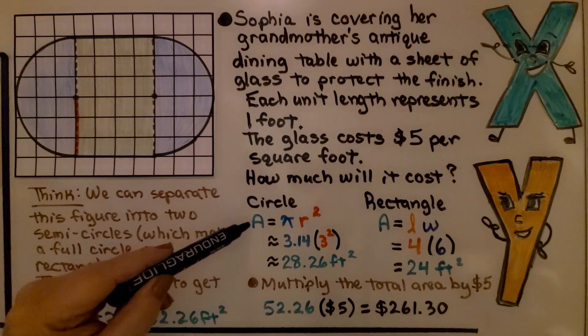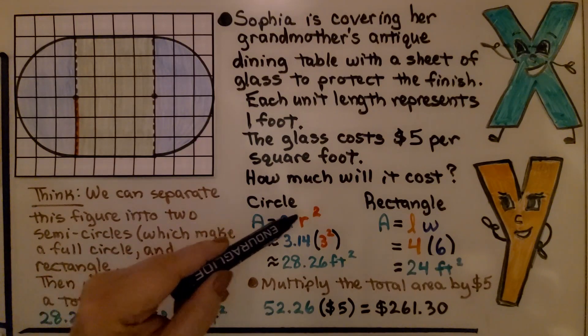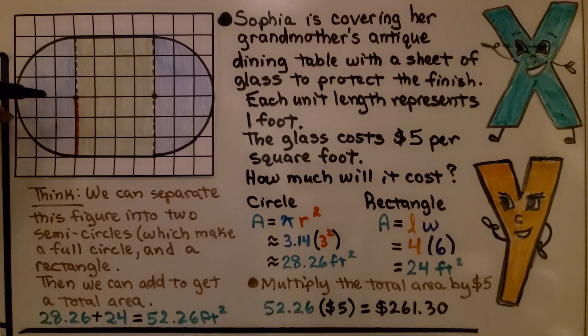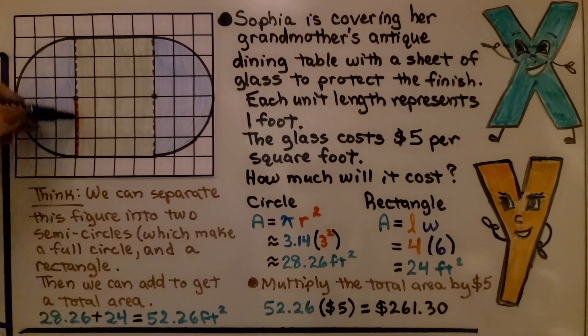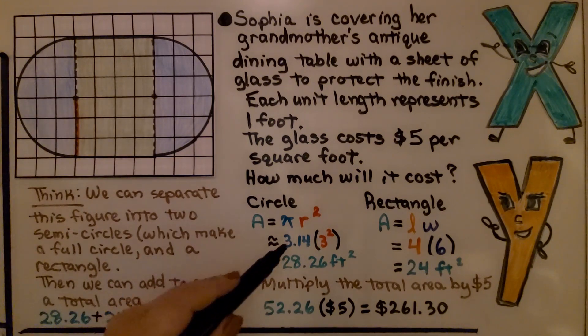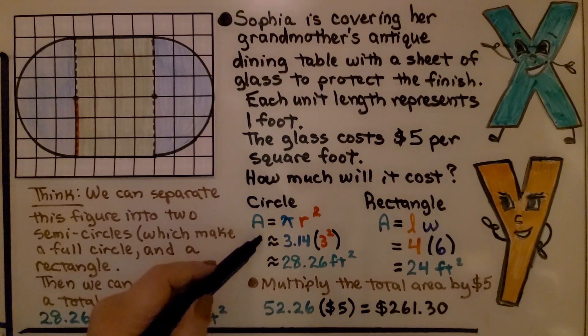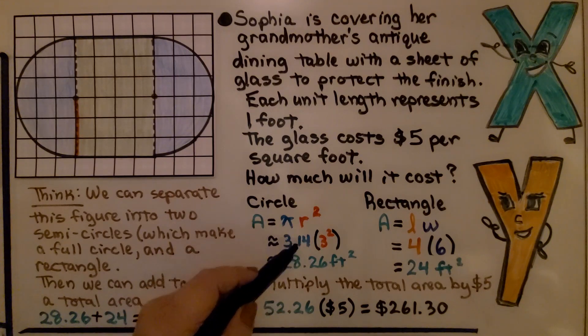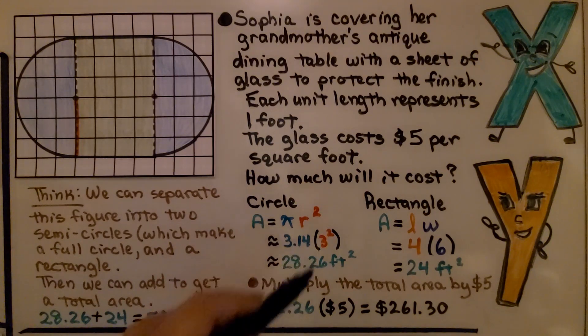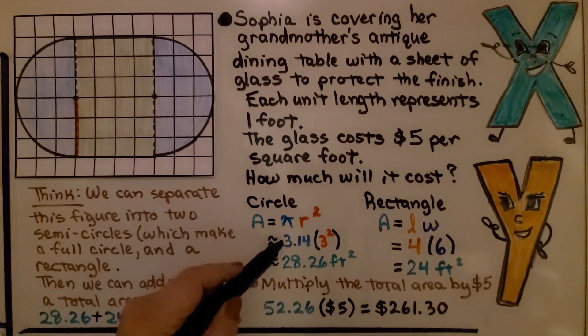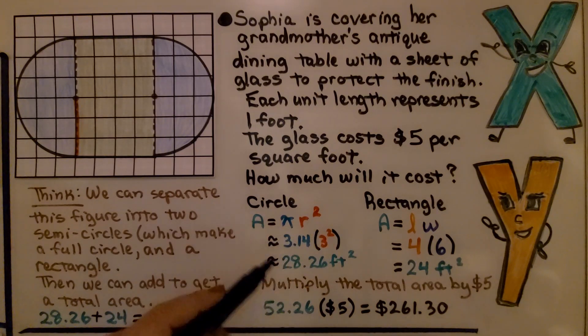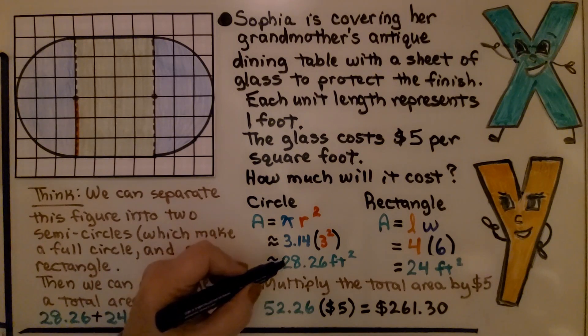The area for a circle is area equals pi r squared. We can see here that the radius, if this is the diameter of the circle, the radius is half of that, so we have three units. We do approximately 3.14 for pi times 3 squared. And 3 times 3 is 9, so we have 3.14 times 9, which is approximately 28.26 feet squared.